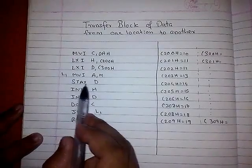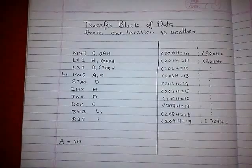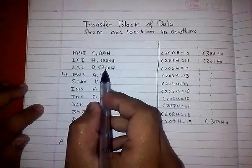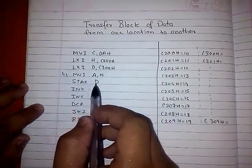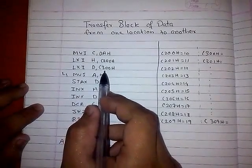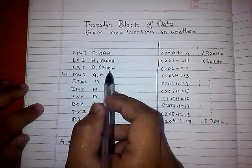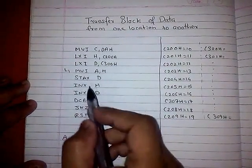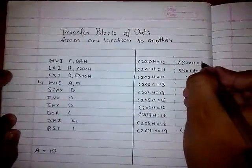Now we do STAX D. This is used for storing the data of the accumulator into a memory location. Since the register D points to memory location C300H, when we do STAX D, the data of the accumulator will be stored in C300H. So when we do STAX D, C300 will get 10.